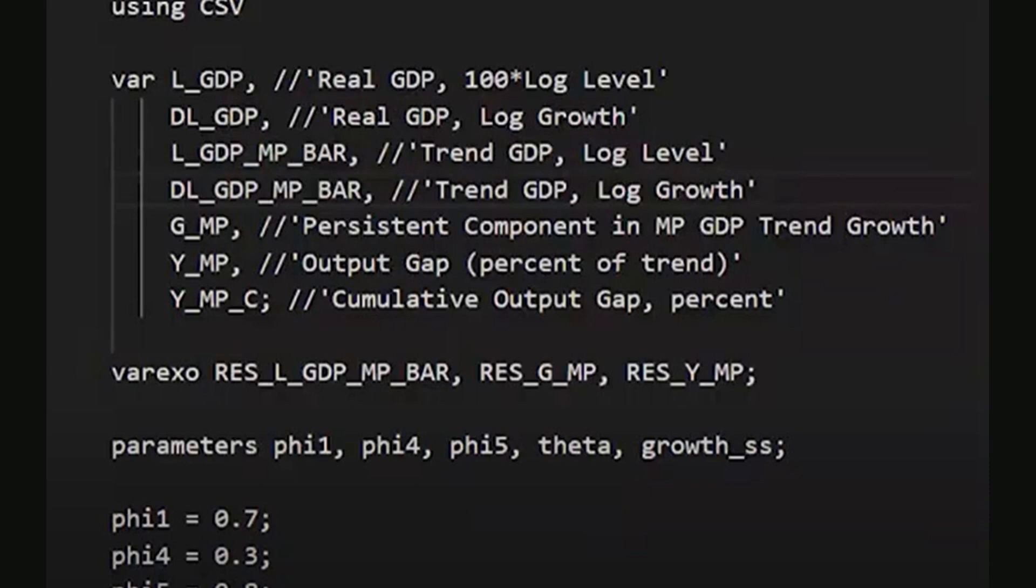For this model, we include the real GDP level in natural log terms, LGDP, its growth in log terms DLGDP, and the trend GDP LGDP_MP_BAR. Additionally, we define its growth DL_GDP_MP_BAR, the persistent component in trend GDP growth G_MP, the output gap Y_MP, and the cumulative output gap Y_MP_C.